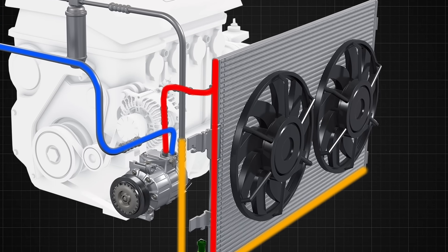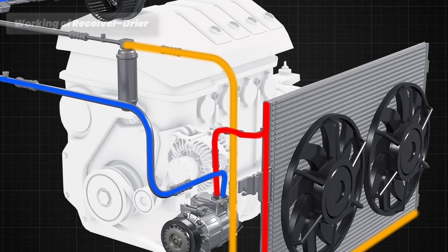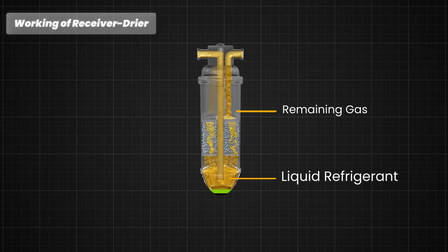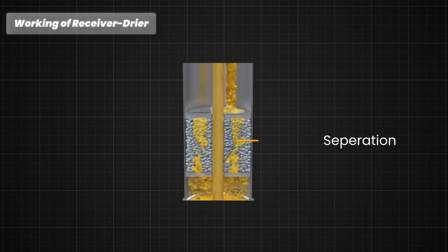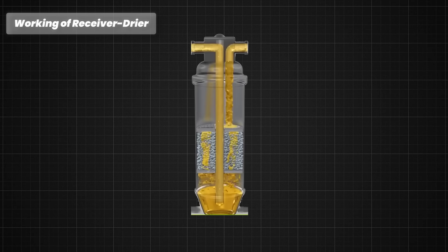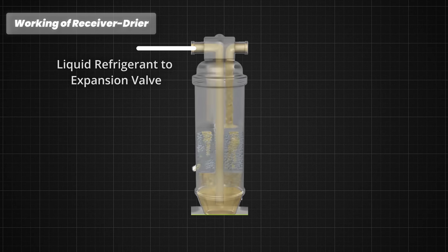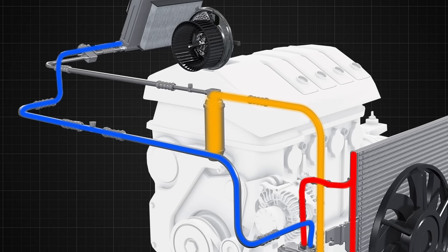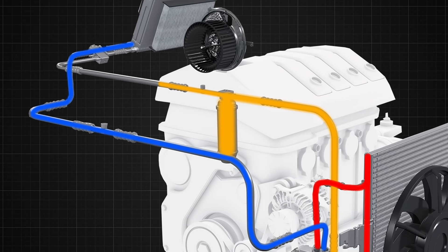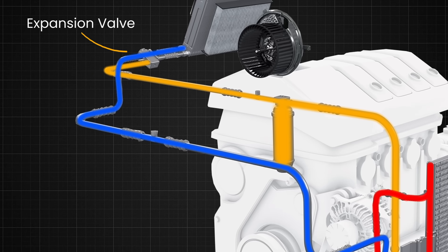The refrigerant is then cycled through the receiver dryer. The receiver dryer helps separate any remaining gas from the liquid refrigerant. Its internal structure facilitates this separation, ensuring that only liquid refrigerant flows to the expansion valve. The filtered, moisture-free, high-pressure liquid refrigerant exits the receiver dryer and flows towards the expansion valve.